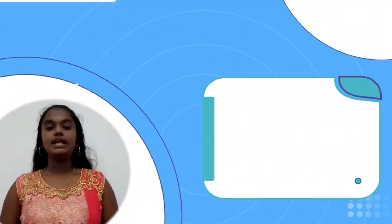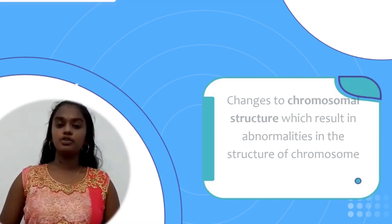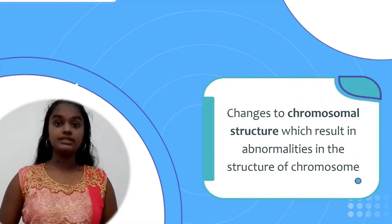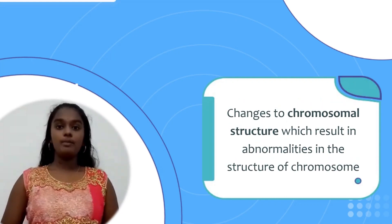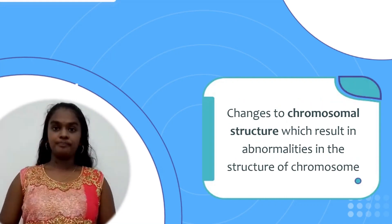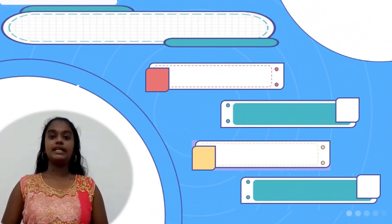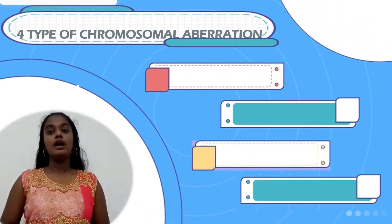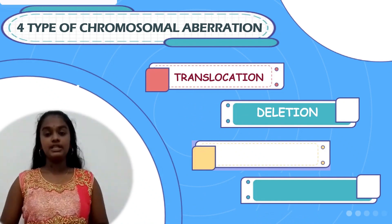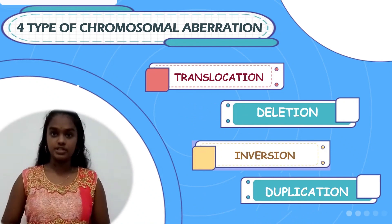Chromosomal Aberration refers to changes in chromosomal structure which result in abnormalities in the structure of a chromosome. Chromosomal Aberration is divided into four types: translocation, deletion, inversion, and duplication.